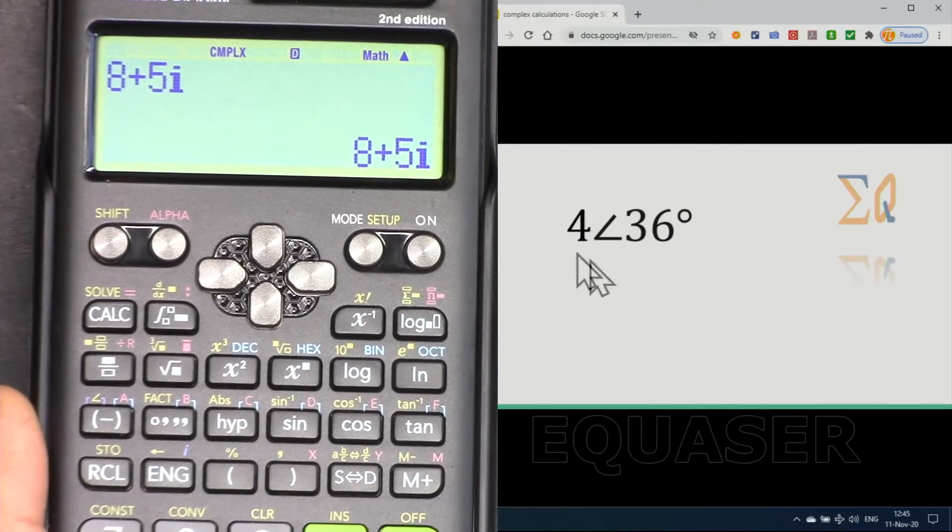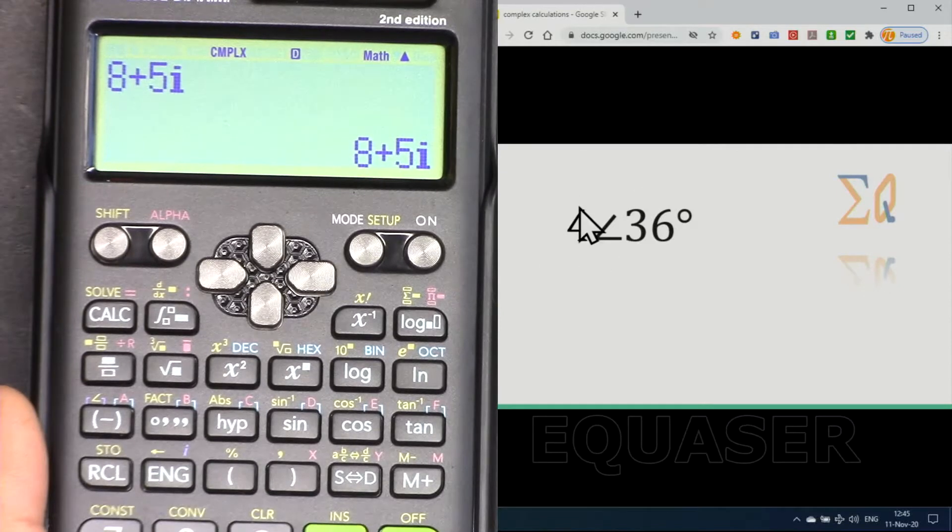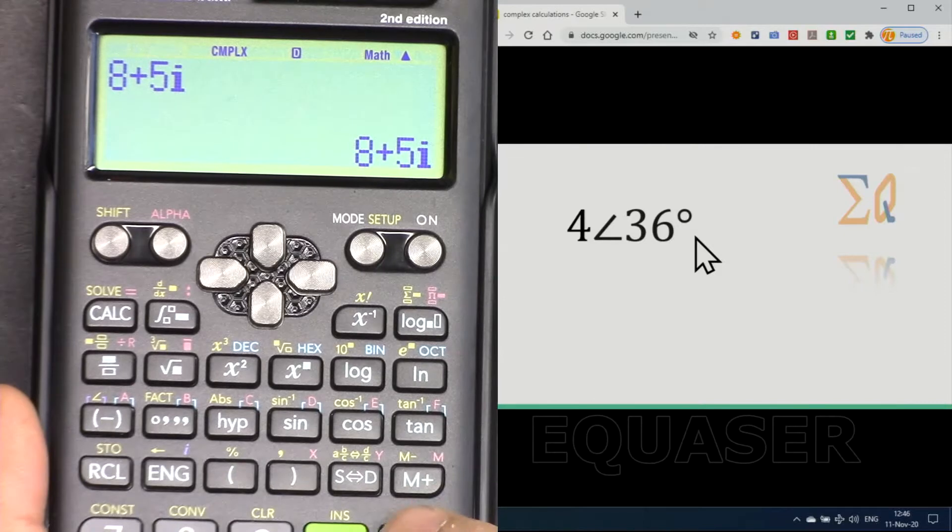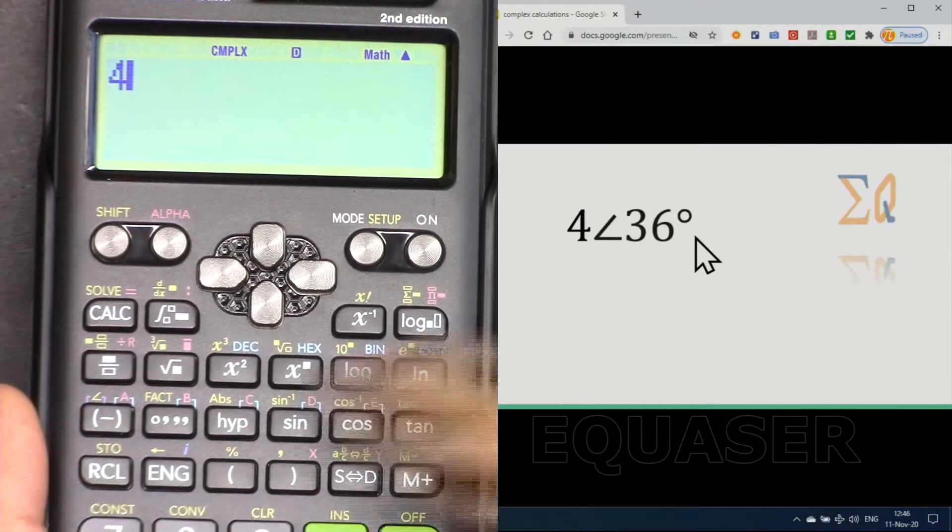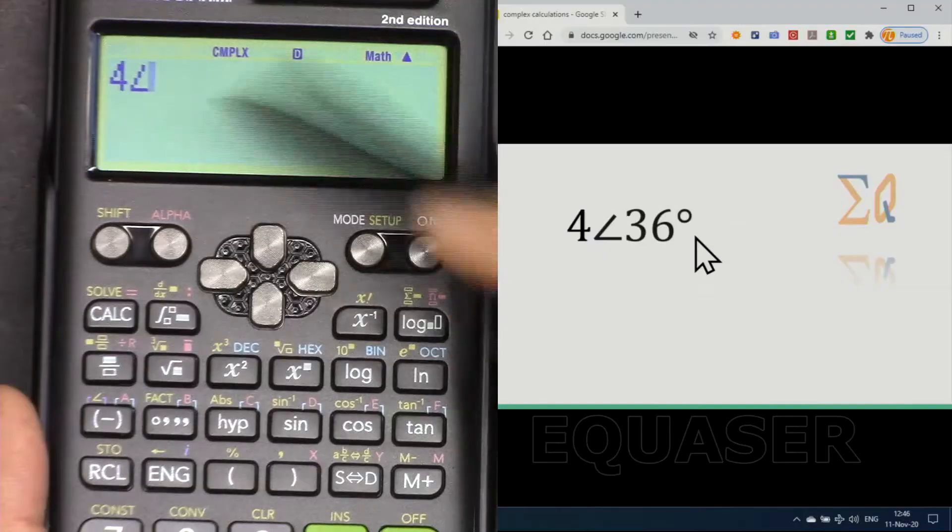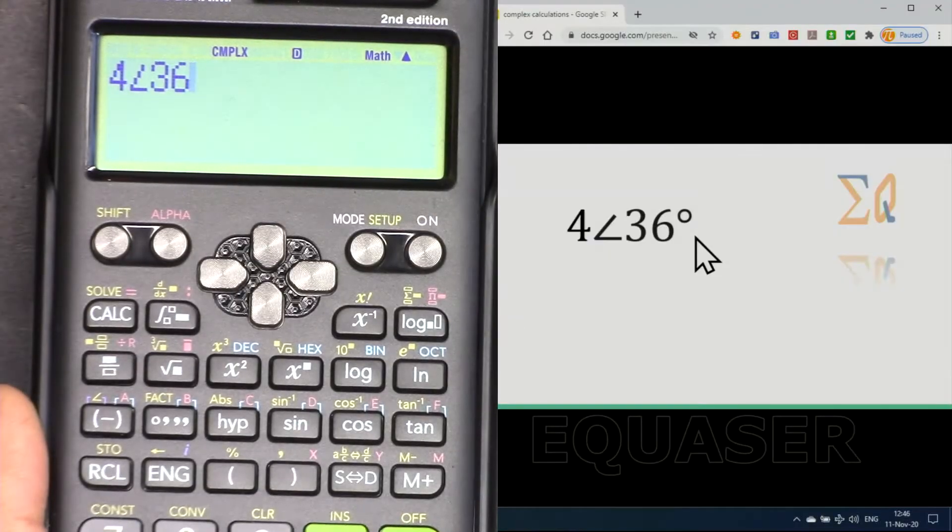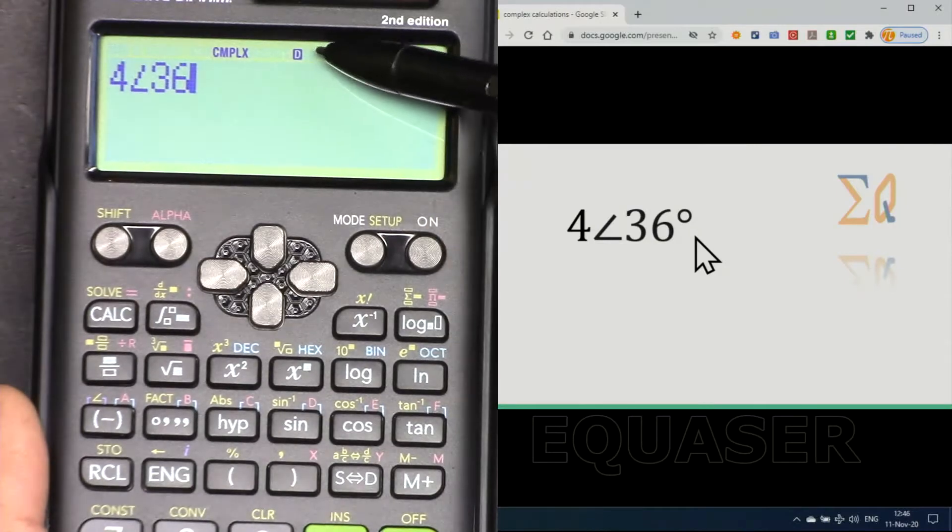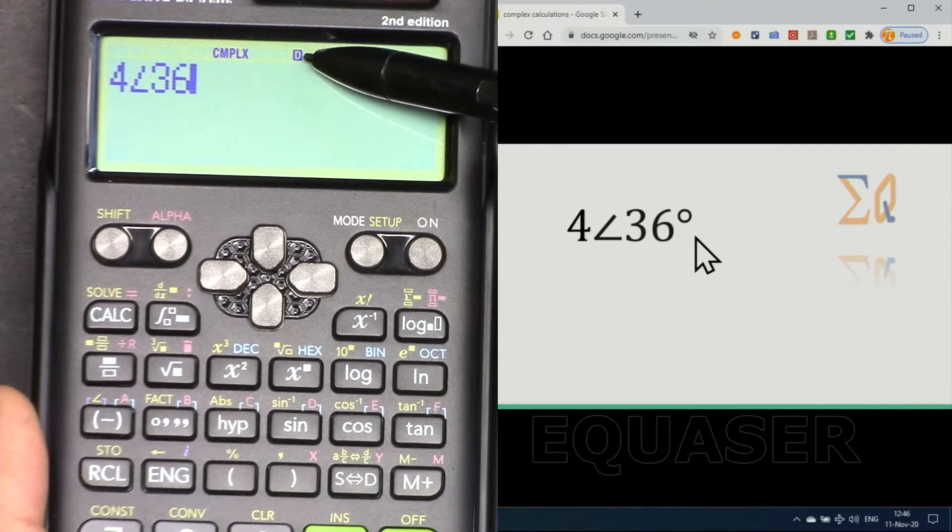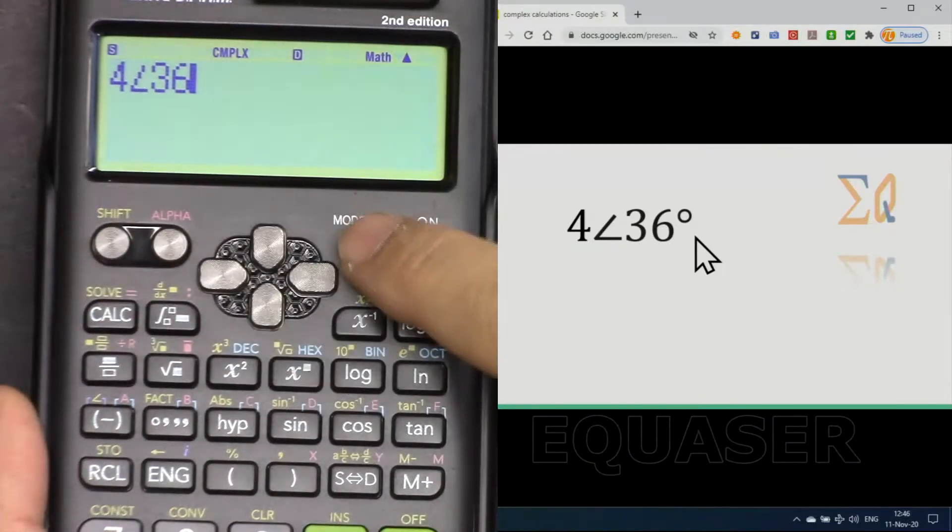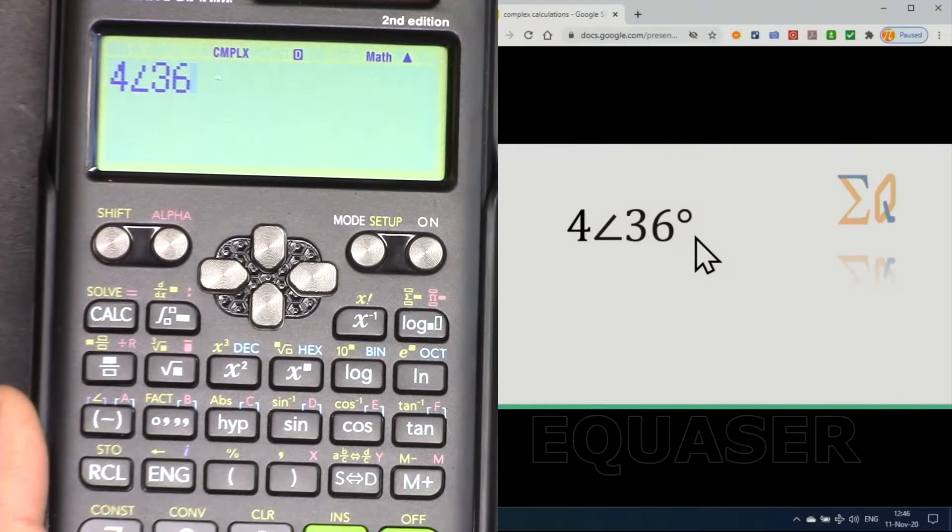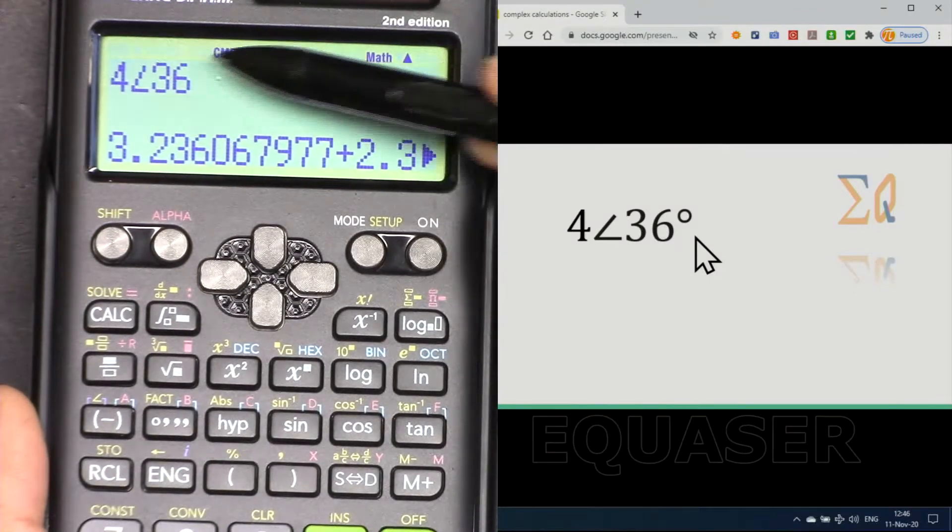If you want to enter in vector mode, the magnitude and the angle, I can press all clear, then 4, and for angle here we press shift angle, then 36. This angle is directly related to the value here. This is degree. If this is not degree, press shift setup and from here, three degree, and make sure it is degree.